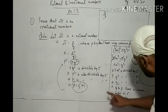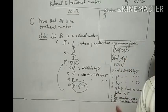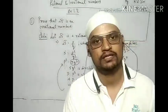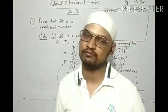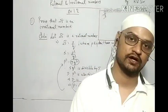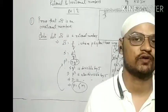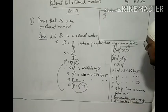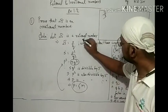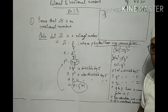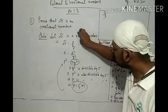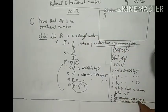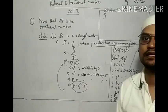So p is divisible by 5 and q is also divisible by 5. This means p and q must have the common factor 5. But our assumption was that p and q don't have any common factor. That assumption is wrong. Therefore our assumption was wrong, which implies √5 is an irrational number.